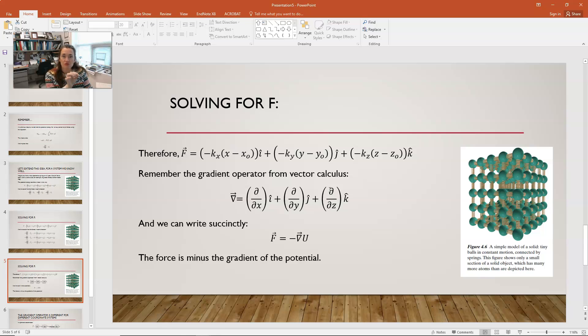And then, we can write our force equation very succinctly using this gradient operator. F is equal to minus grad U. The gradient operator supplies the vector part, which turns your potential energy into a force vector. So, that's very important that you remember that notation. The force is minus the gradient of the potential. This is a generally true equation. So, it's very important that you remember it. Maybe you should chant it.